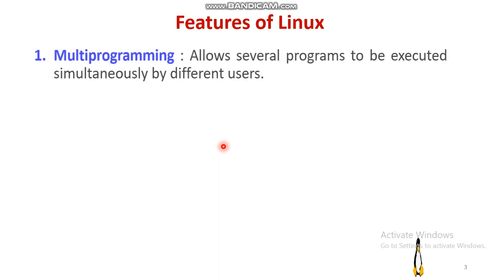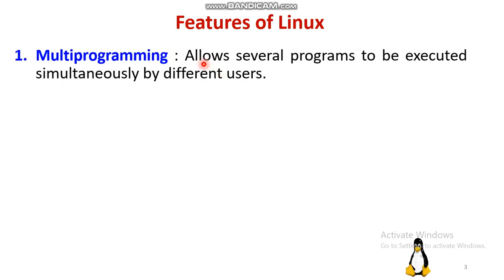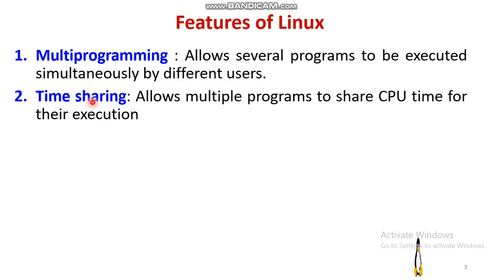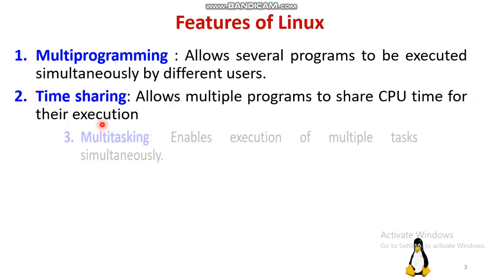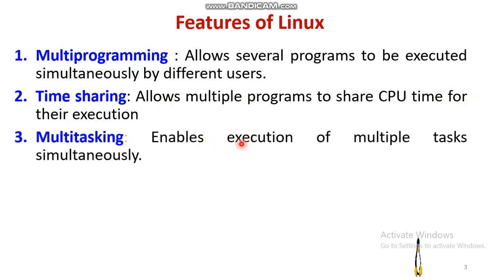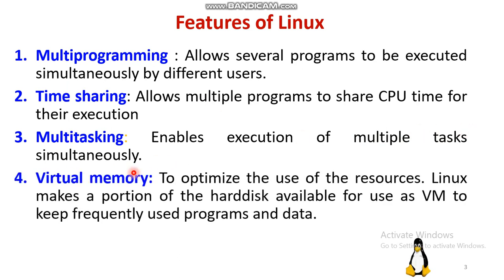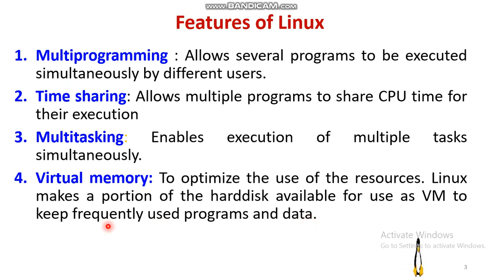The first feature, multiprogramming, allows running several programs simultaneously by different users. Timesharing means multiple programs share the CPU time for their execution. Multitasking enables the execution of multiple tasks simultaneously. Virtual memory optimizes the use of resources — Linux makes a portion of the hard disk available as virtual memory to keep frequently used programs and data, so they can be executed very quickly.